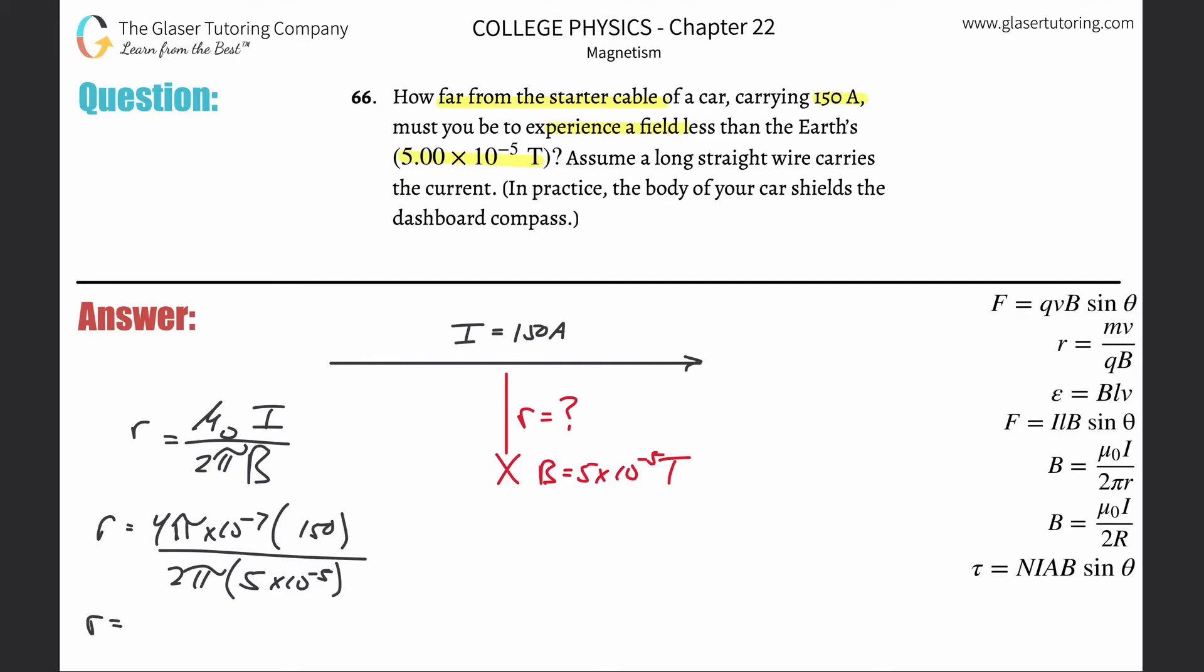So now it's going to be 4π×10^-7 multiplied by 150, divided by (2π × 5×10^-5), and we get about 0.600 meters.